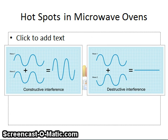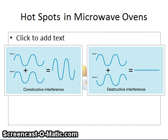Hotspots in microwaves basically occur because microwaves are electromagnetic waves, and so they travel as sinusoidal waves — they have a sine curve shape. In places they have peaks and troughs, and where two peaks come together they add together, which is known as constructive interference, as you can see on the diagram on the left. Alternatively, if a peak and a trough come together, you get destructive interference.